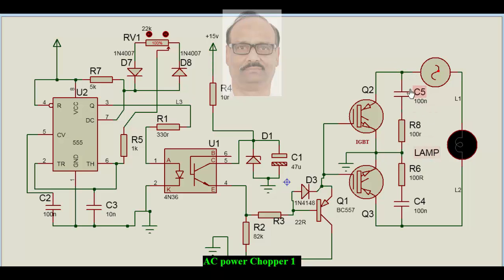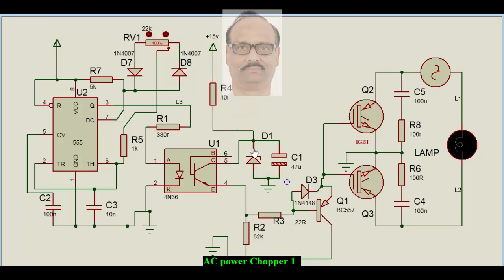That's how the AC supply is covered, and we have a snubber circuit because at the time of switch off, the current which was flowing through the IGBT has to be taken care of during the off period. For the drive, we have pulse width modulation coming from a standard 555 timer with a variable duty cycle. The output is fed to an opto-isolator, which is driven from a higher voltage source because the IGBT requires more than 12 volts — we have taken a 15 volt supply with a series resistor.